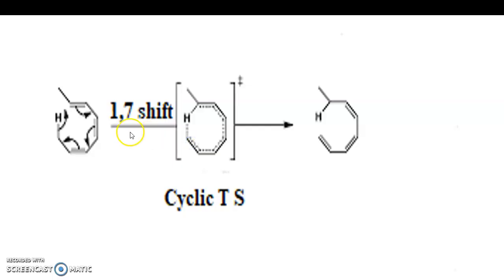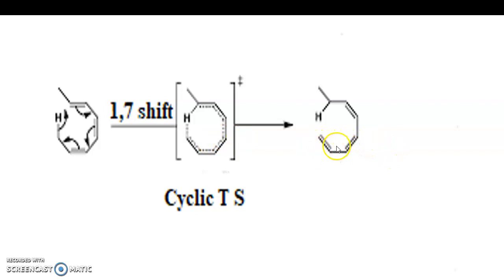We will take another example: the 1,7 shift. Here the compound is heptatriene, which has three double bonds. The hydrogen atom which is at position one goes to position seven via a cyclic transition state and we get the product. This is called a 1,7 shift or 1,7 sigmatropic rearrangement. So now you understand what sigmatropic rearrangement is, what is a 1,3 shift, a 1,5 shift, and a 1,7 shift.